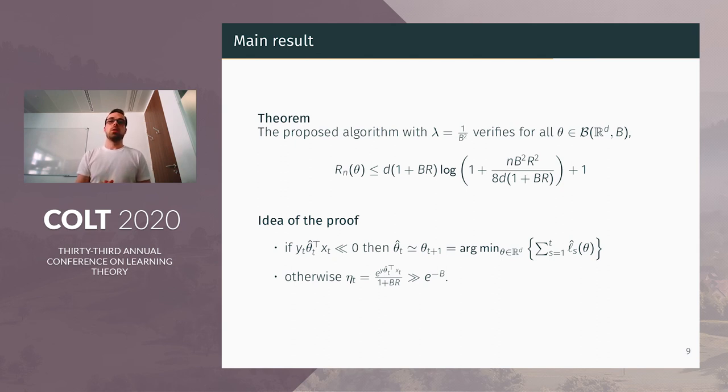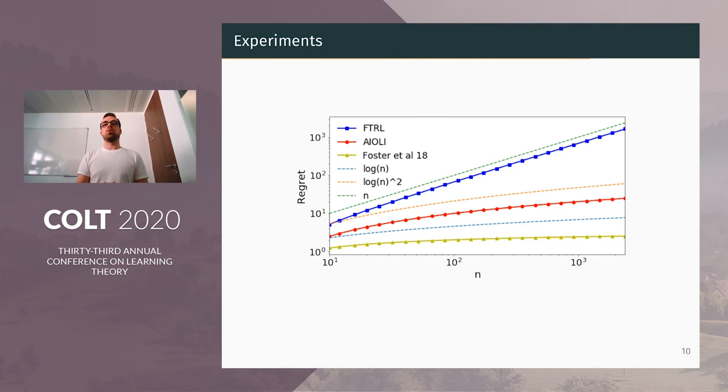And in the other case, η, which now depends on θ-hat_t, will be much bigger than exponential minus B. And so we won't pay exponential constants.